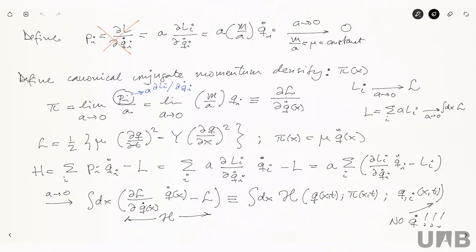Last day, we introduced for the first time the Hamiltonian formalism for fields. The way we did this is by going back to the discrete system with an infinite set of individual masses, and we took the continuum limit, as we did when we started with the Lagrangian formulation. That led us to the Hamiltonian density and the canonical conjugate momentum density — the derivative of the Lagrangian density with respect to the time derivative of the field.